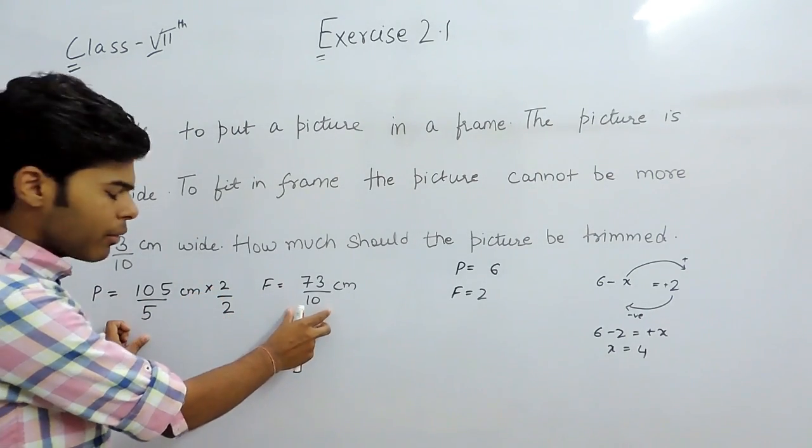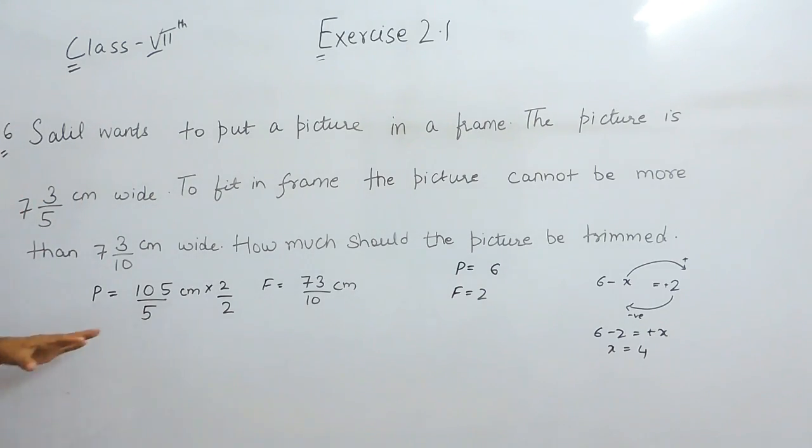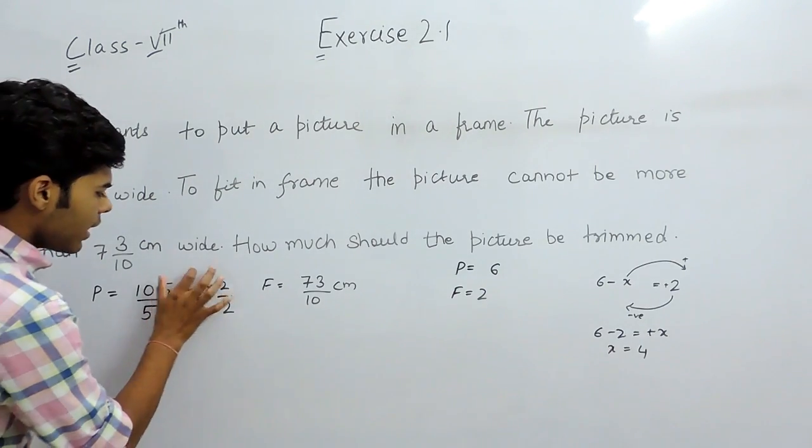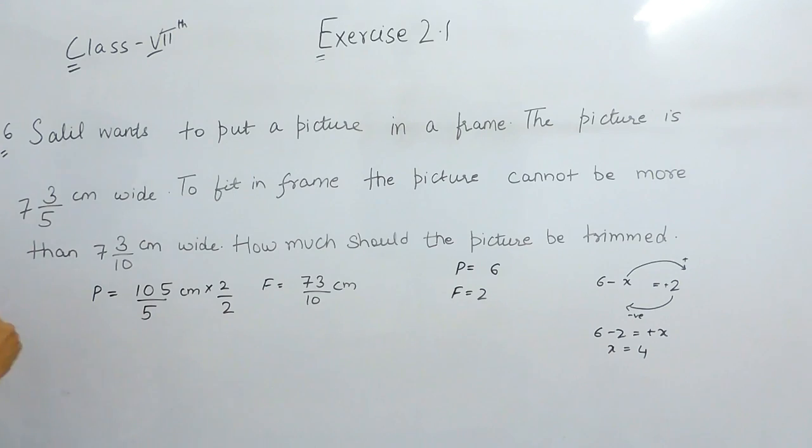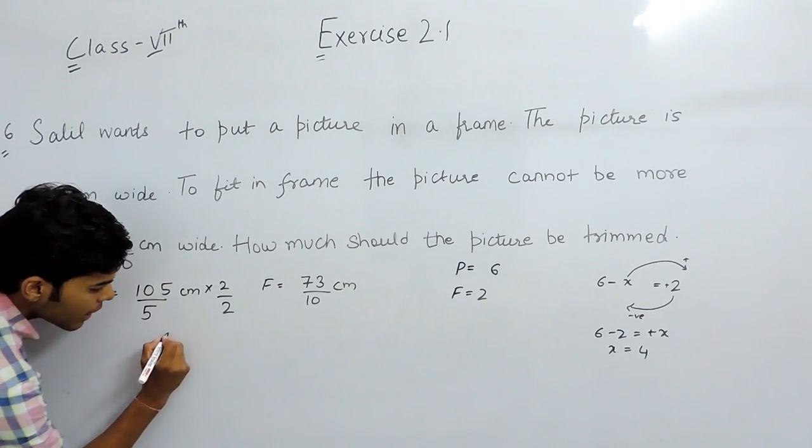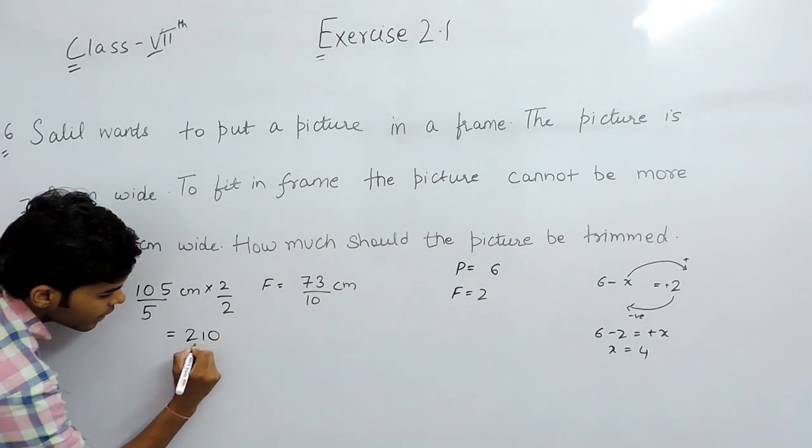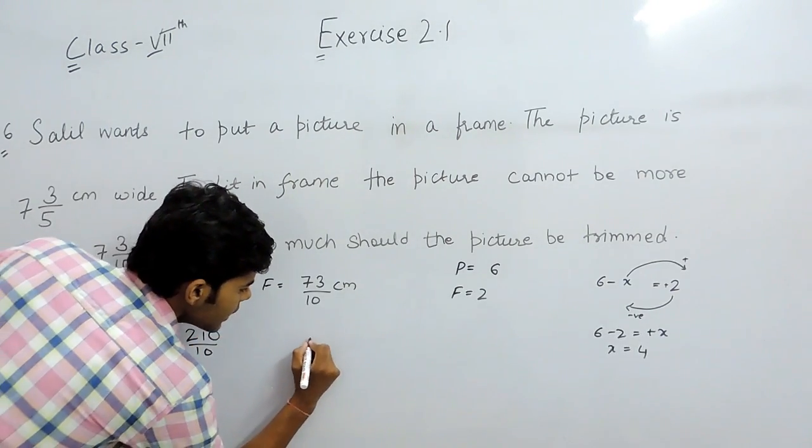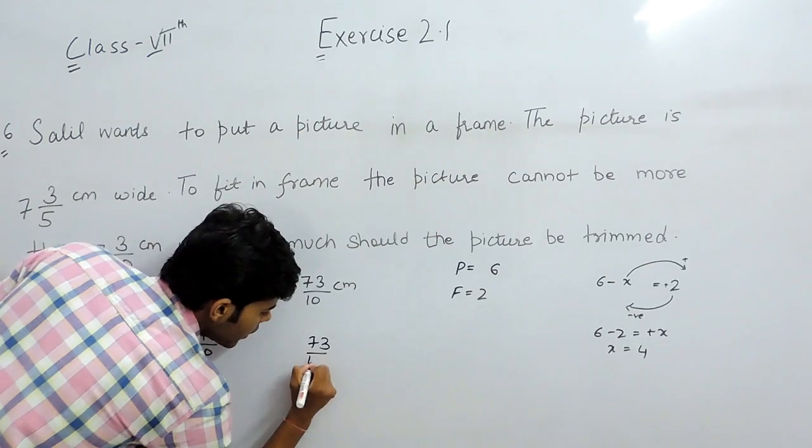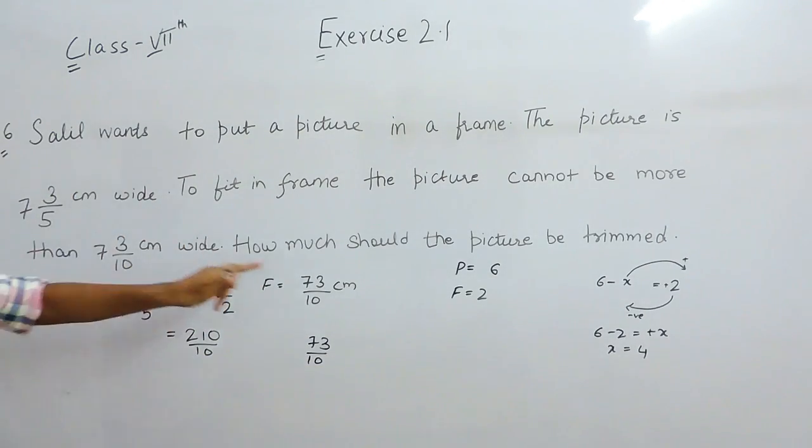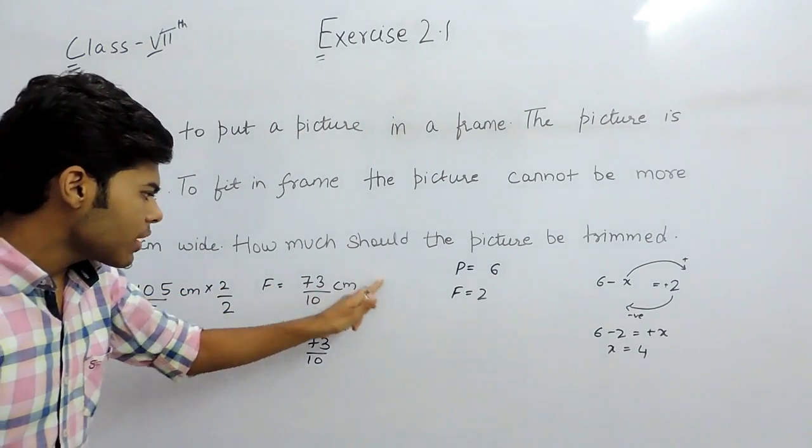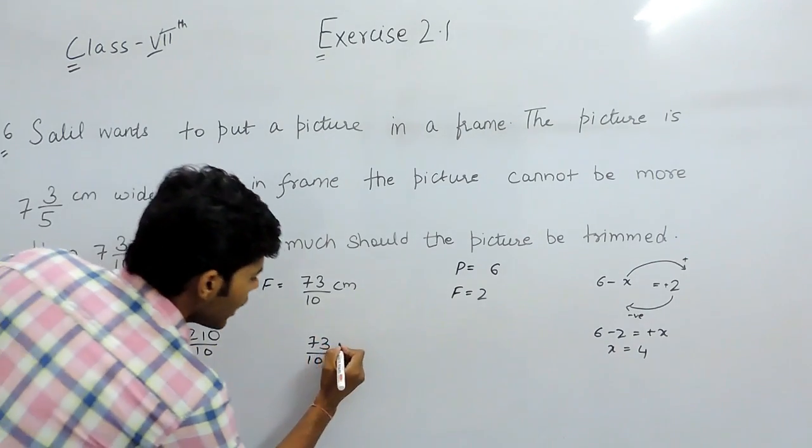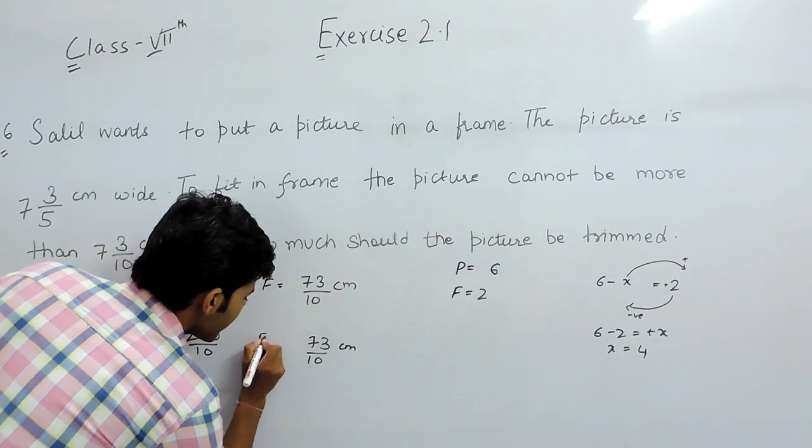We multiply 5 by 2, that will be equal to 10. So denominator will be same. So that's why our calculation with the numerator will become easier. So it will become 210 upon 10 and that is 73 upon 10. So the picture should be equal to 73 upon 10 cm in order to fit in that frame.